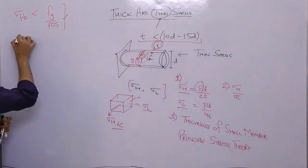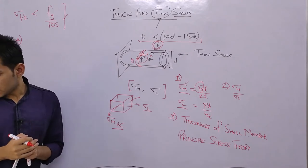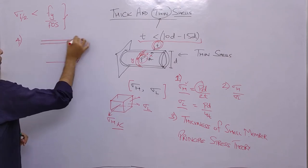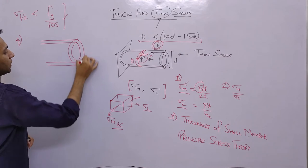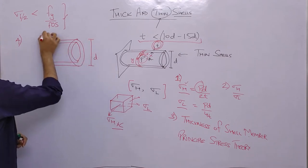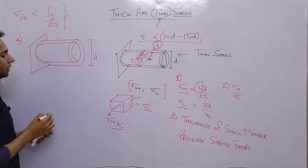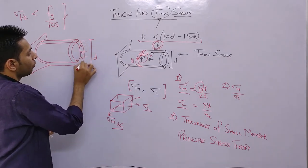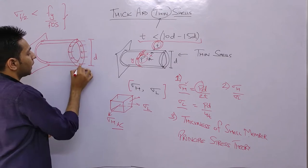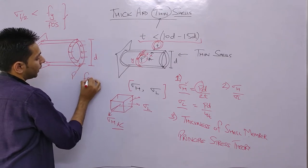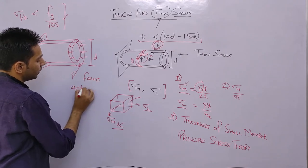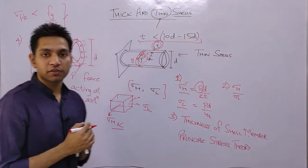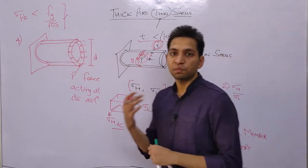The fourth kind of question — which has been asked in the previous year GATE exam — gives you a cylinder of diameter d with an internal pressure p, and an axial force P acting on the outside of the section at its cross-section. You are given diameter d, the force P, and the internal pressure p.